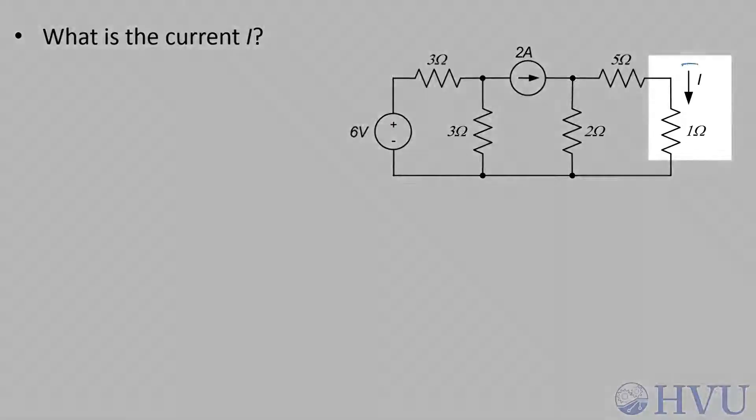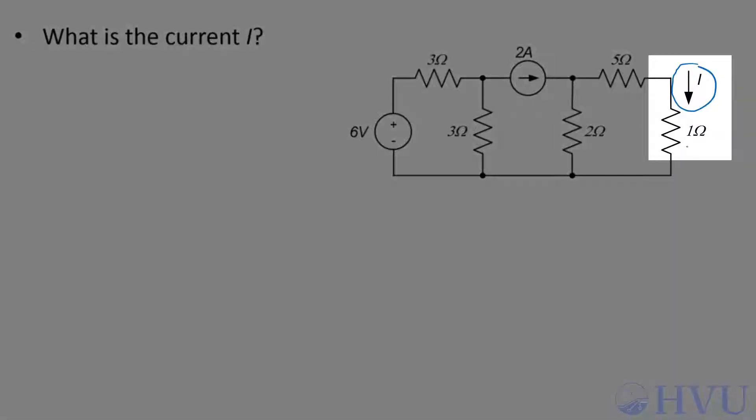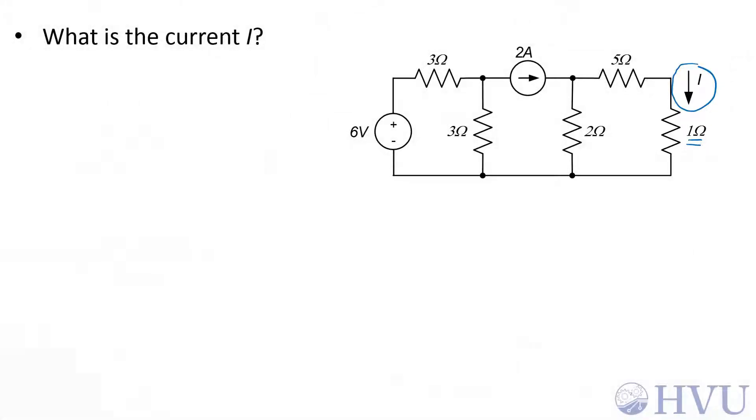In this circuit, we want to find this current I through this 1 ohm resistor. Let's examine the circuit a little bit first to see if there's any simplification we can identify.